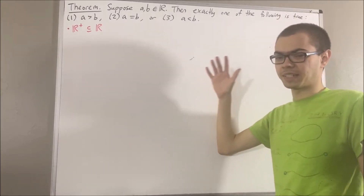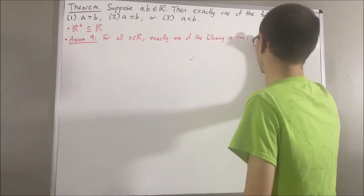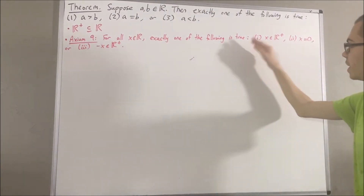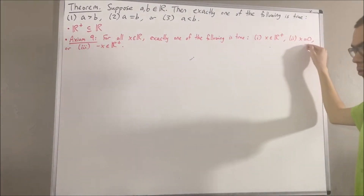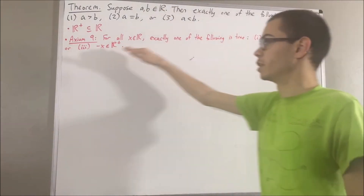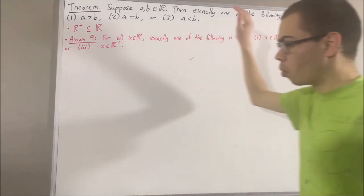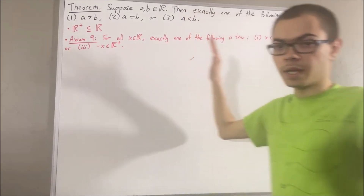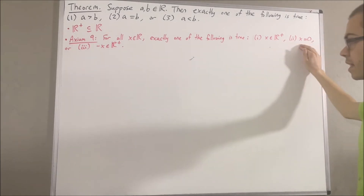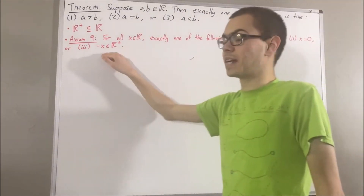In this video, we are going to be using Axiom 9, which says the following. For all real numbers x, exactly one of the following is true: x is a positive real number, x is equal to zero, or the negative of x is a positive real number. This means x is positive, or x equals zero, or negative x is positive — and no two of these can hold simultaneously.